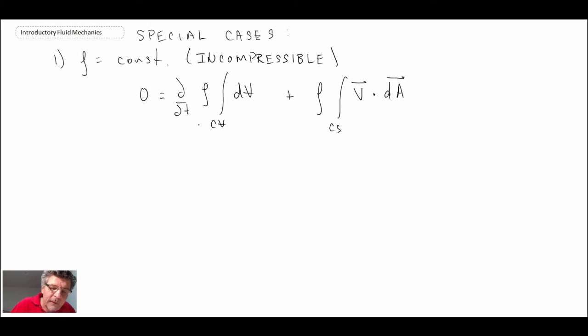The next thing I can do, I can look at this here. Once we've pulled the density out, that is just the volume because it's the integral and the control volume itself does not change with time. Consequently, that can be rewritten.